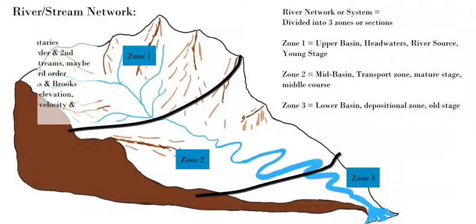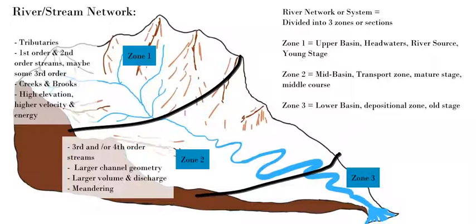We can break the river system into three distinct zones. Zone one is the upper basin — the headwaters, the source — at high elevation where you get small first, second, and third order streams, tributaries, creeks, and brooks flowing downhill with high, steep gradients, faster velocity, and high energy down to lower elevation. Zone two is the mid basin or transportation zone, where third or fourth order streams flow down from the headwaters toward the output, or exit, at the end of the river's lifespan.